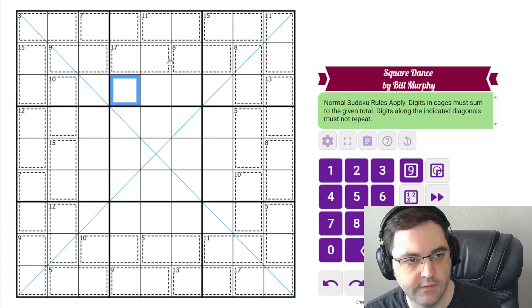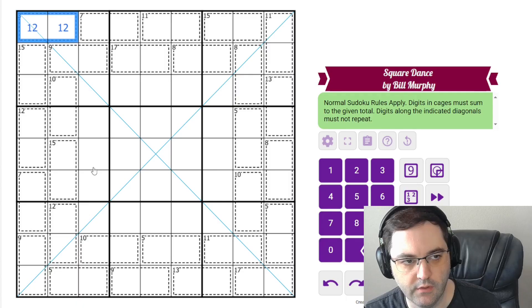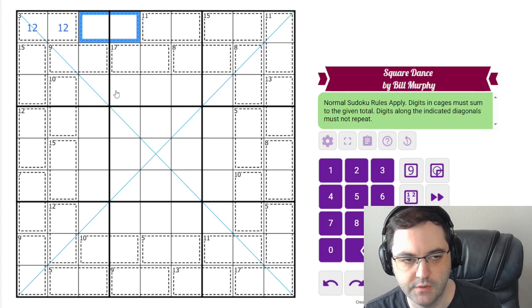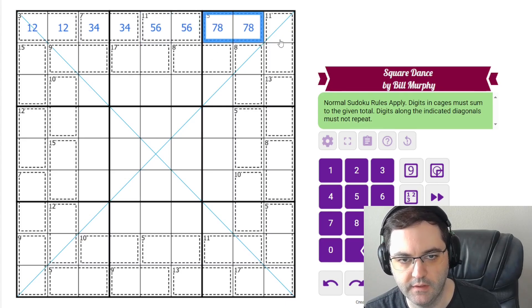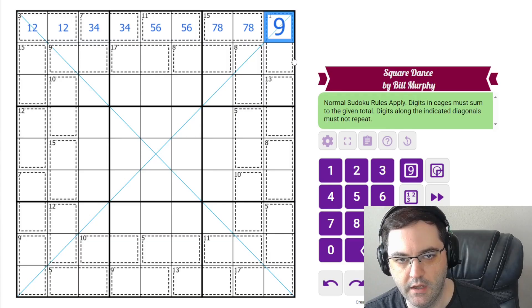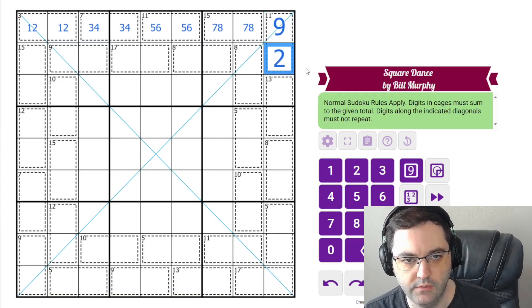Let's get started with our minimum and maximum cages. 3 is always 1, 2. And now 7, since it can't contain 1 or 2, the lowest it can be is 3, 4, which is 7. The 11 must now be 5, 6. And the 15 must be 7, 8. That's going to give us a 9 in the 11 cage and a 2 to go with it.